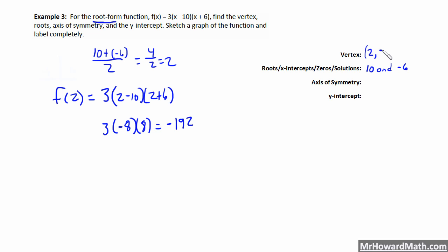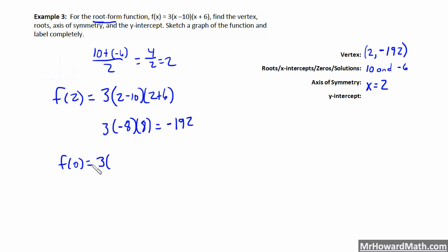We're not going to be drawing this to scale. The axis of symmetry is always x equals the x-coordinate of the vertex, so x equals 2. The y-intercept occurs when x is zero, so we substitute zero in: 3 times negative 10 times positive 6 equals negative 180. So our y-intercept is at negative 180.